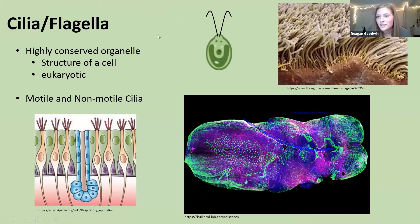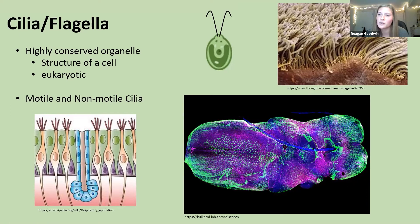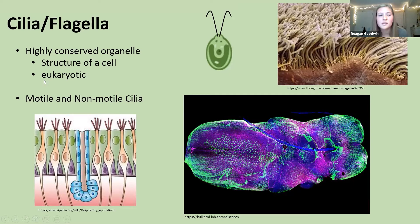So what are cilia and flagella? The terms cilia and flagella are used interchangeably. They are a highly conserved organelle — essentially a structure on the cell, much like the nucleus or the mitochondria. There are two types of cilia: motile and non-motile. Motile cilia play a role in motility and fluid flow, whereas non-motile cilia play a role in sensory function.